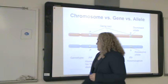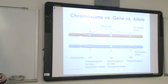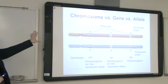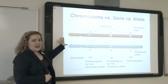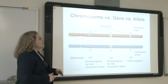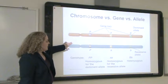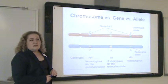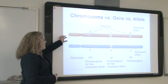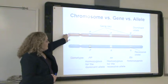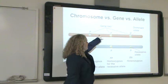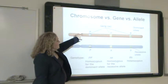The next thing I want to review is the concept of what's a chromosome, what's a gene, what's an allele. This picture I find really useful — it shows two chromosomes in two different colors. The colors indicate which parent you got each chromosome from. Let's say the red one is from the dad and the blue one is from the mom. We've got two versions of this particular chromosome, and each chromosome has particular genes on it.